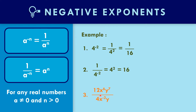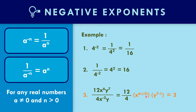How about number three? Twelve x to the sixth y to the seventh, all over four x to the negative two times y. Copy twelve over four, then apply the quotient rule — subtract exponents with the same base. Copy x: six minus negative two equals six plus two, giving x to the eighth. Copy y: seven minus one gives y to the sixth. Twelve divided by four is three. The final answer is three x to the eighth y to the sixth power.